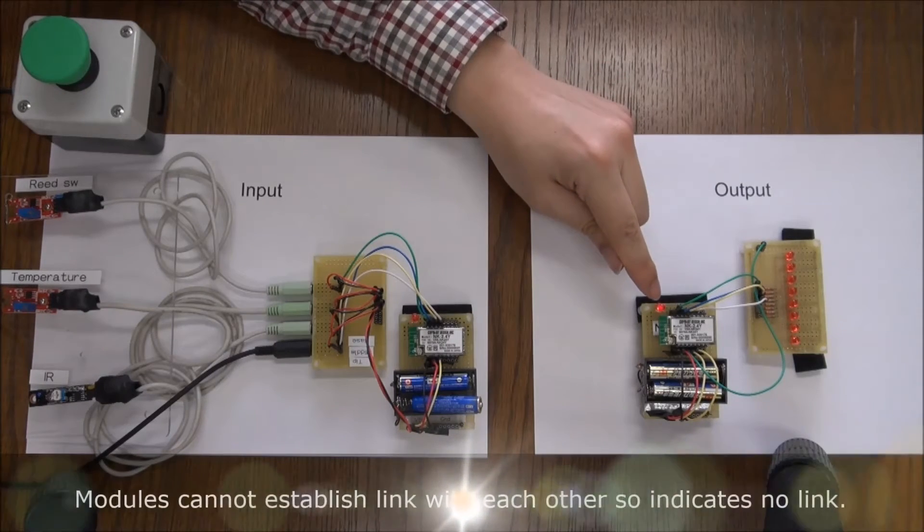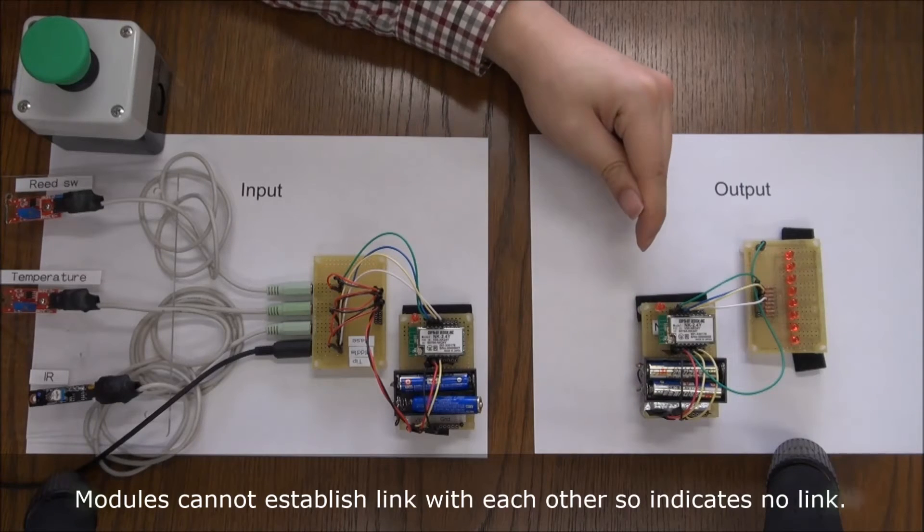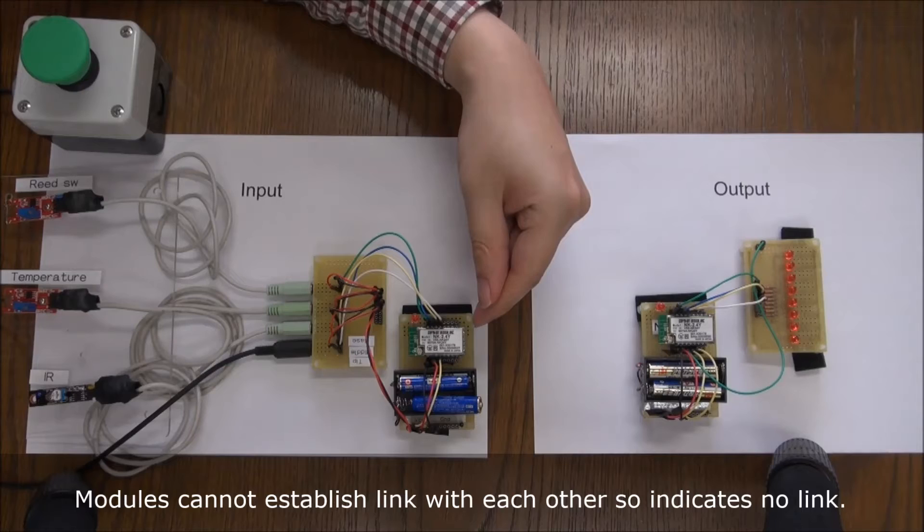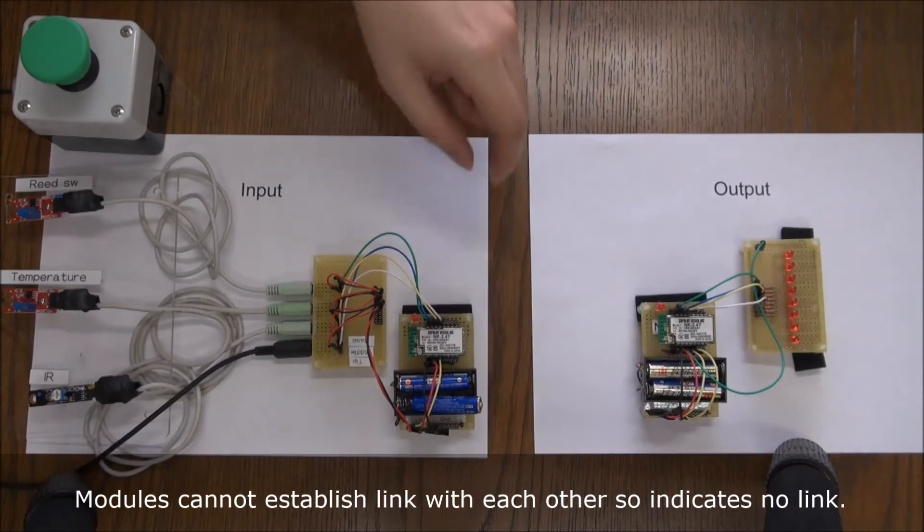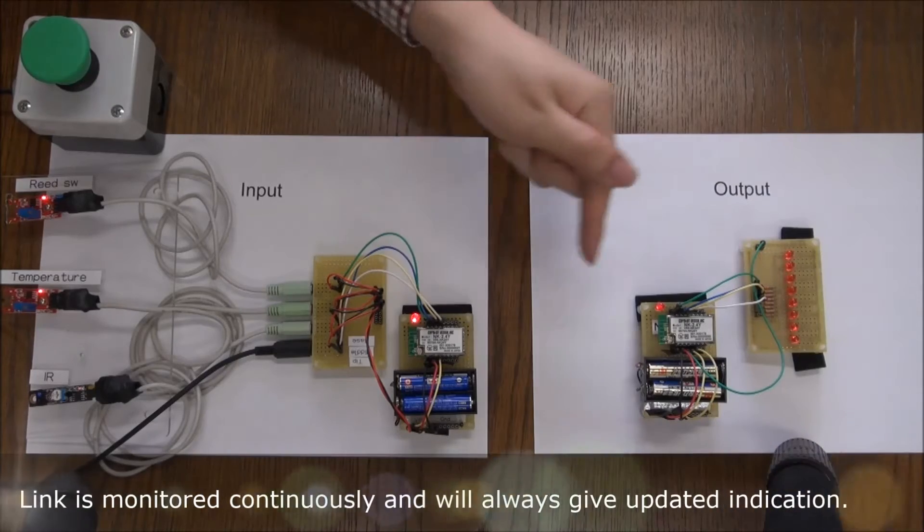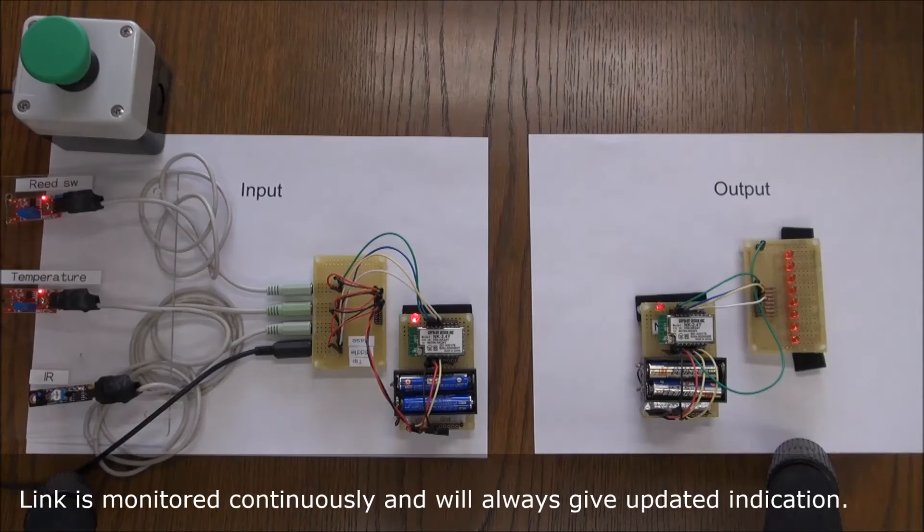We can see a flashing LED means the link has been broken, and this module can no longer see the link to this one. Now, if I put the battery back in, you can see the LEDs come back on steady, which means the link has now been established.